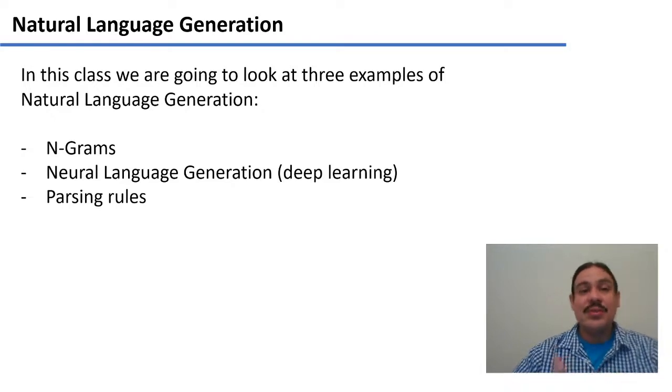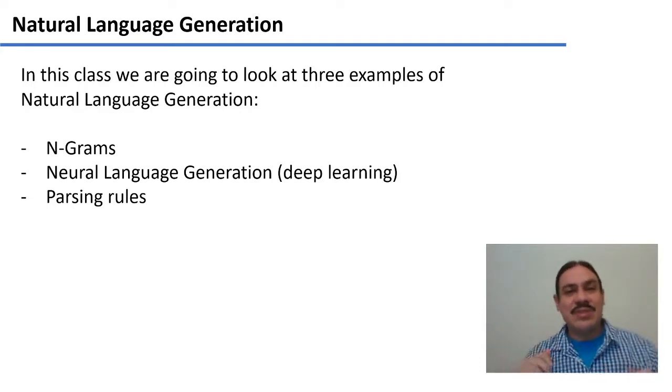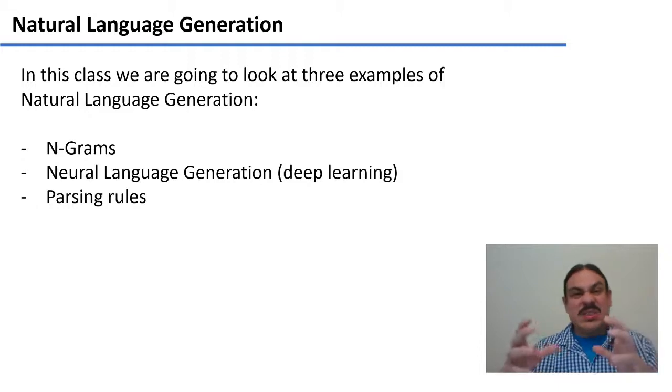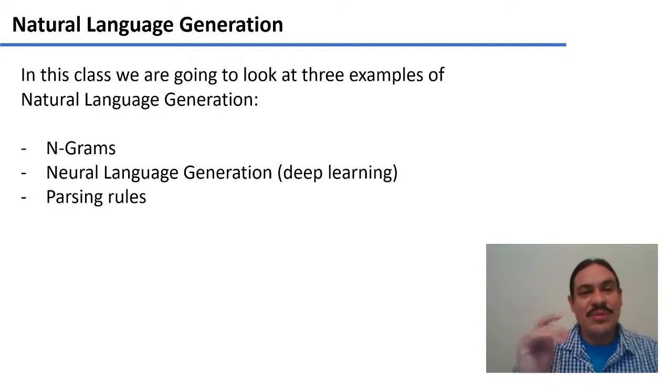In this class, we're going to look at three ways in which we can generate natural language. This video is going to talk about n-grams, so chains of words chained by their probabilities. On week six, we're going to talk about neural language generation, which uses deep learning neural networks like RNNs and LSTMs to generate new text. And on week seven, we're going to be talking about parsing rules to aid in natural language generation. For example, if we have a very specific structure that we want to generate, like a poem. Here, we're going to talk about the most basic form of natural language generation through n-grams.